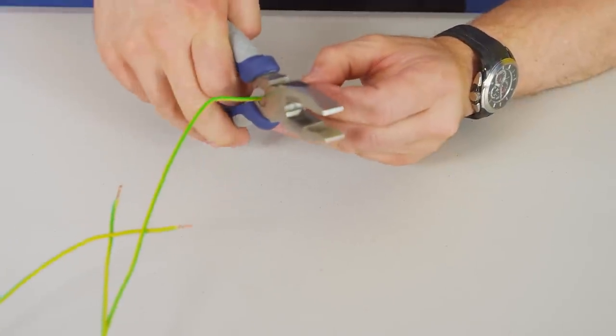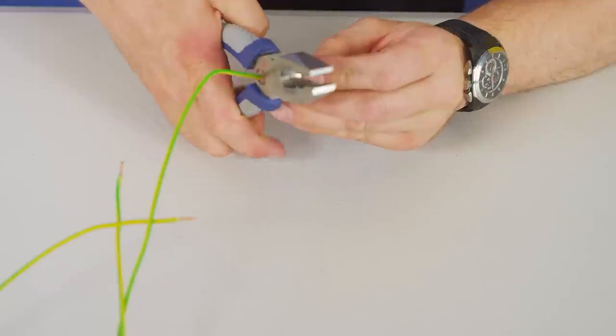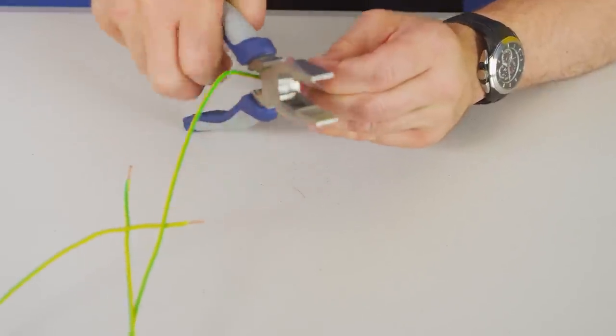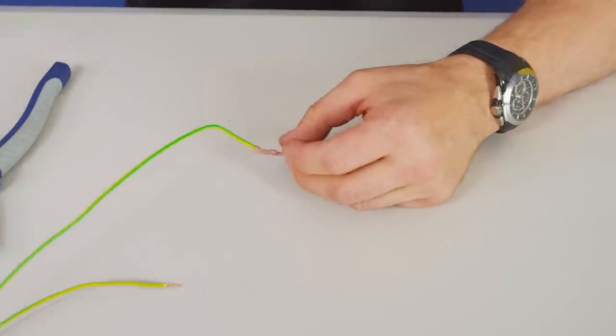I get my pliers with the crimp feature behind the pivot and I'll crimp down in a couple of positions, making sure the cable is held securely.